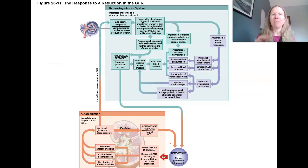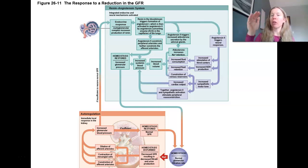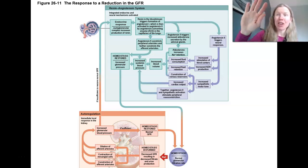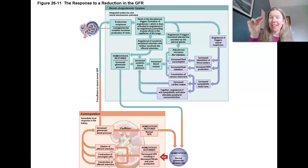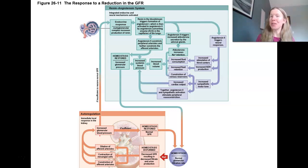Your body tries to maintain homeostasis of glomerular filtration rate. The first thing we always see is autoregulation — the kidney itself tries to fix this. If GFR drops, we drop urine production. You can dilate those afferent arterioles, try to increase capsular hydrostatic pressure, and constrict the efferent arterioles to make sure blood backs up — making it more likely to push into the Bowman's capsule. Those mesangial cells — little contractile cells in the capillaries — can make some adjustments as well, increasing glomerular pressure to restore normal homeostasis.